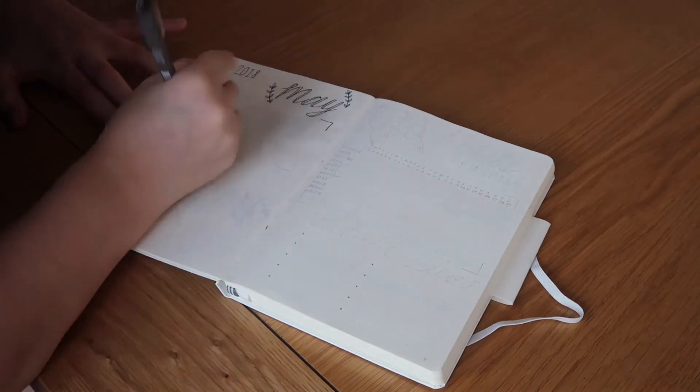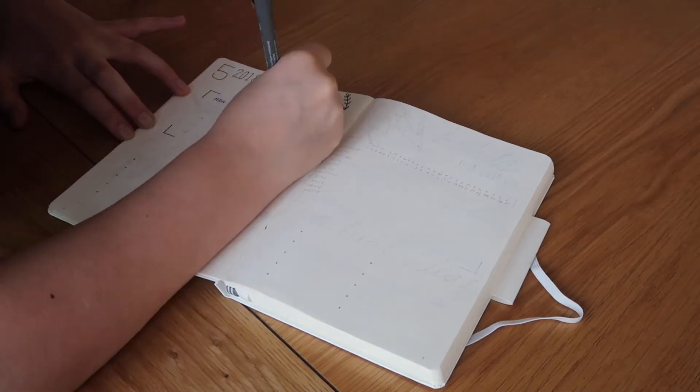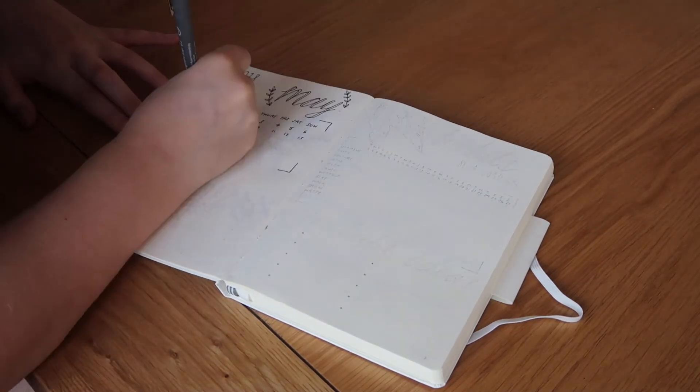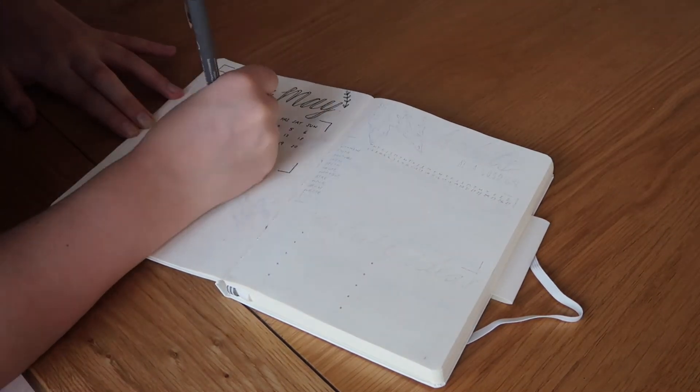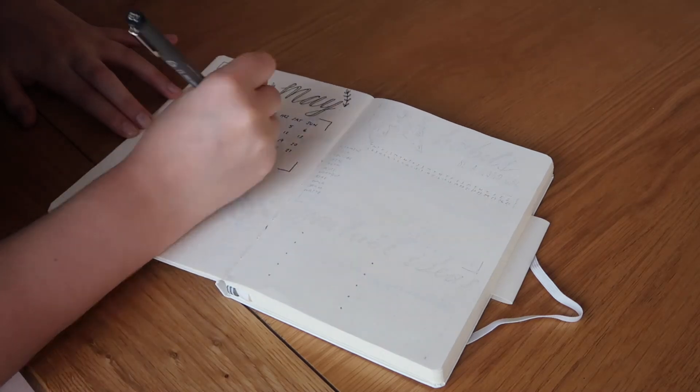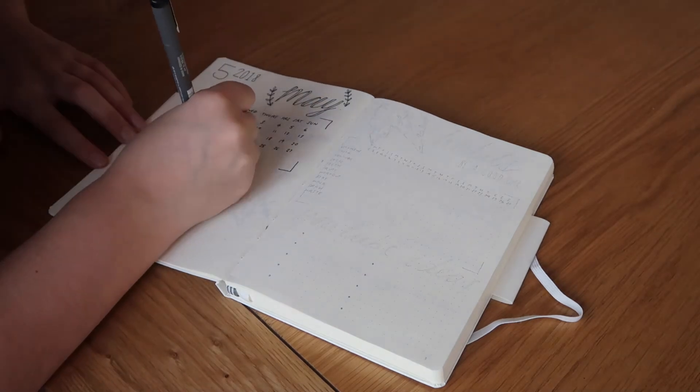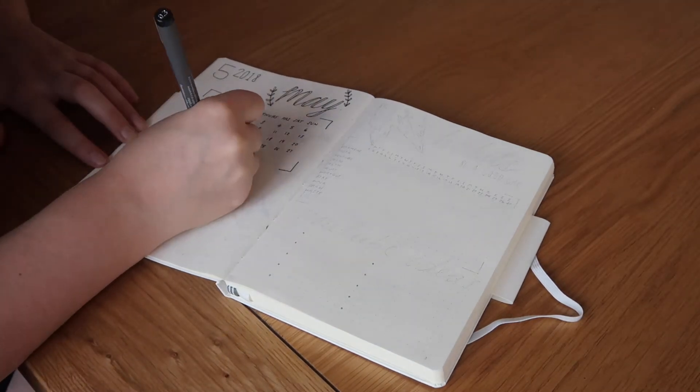My boyfriend actually found it for me, but I then moved on to the next page and I did the calendar. I basically did this so that I could circle key dates and stuff. Again, it's what I've seen in other videos. I've sort of gone off that and ones that I've seen on Pinterest.